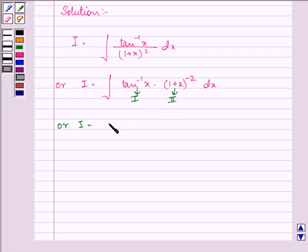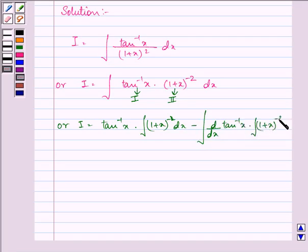So by applying by-parts we have tan inverse x into that is the first function into integral of second minus integral derivative of the first function into integral of the second function dx.